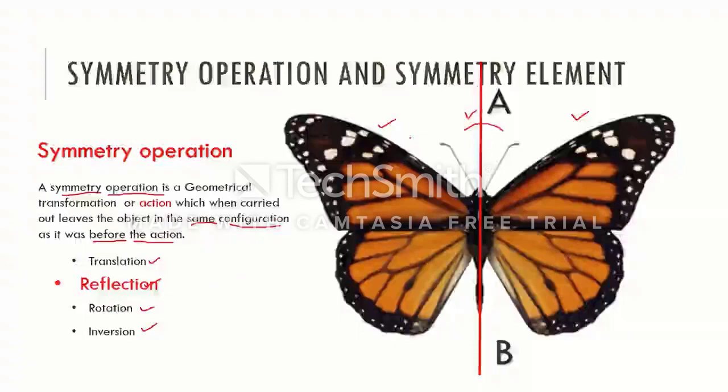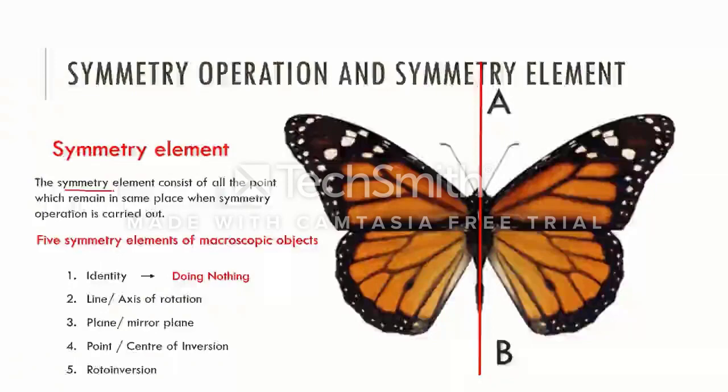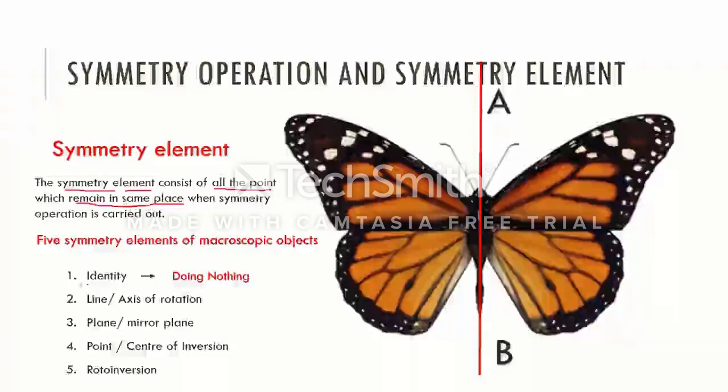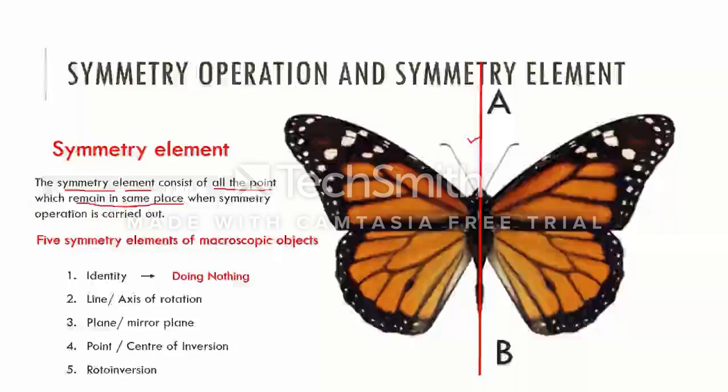Each symmetry operation has an associated symmetry element. The symmetry element consists of all the points of butterfly elements which remain in the same place when the symmetry operation is carried out. All spatial points of an object that remain invariant under a symmetry operation make the symmetry element. Again, in the example of the butterfly, the reflection is carried out at this mirror plane. Therefore, a symmetry element comprises all points of butterfly that lie on the mirror plane AB.